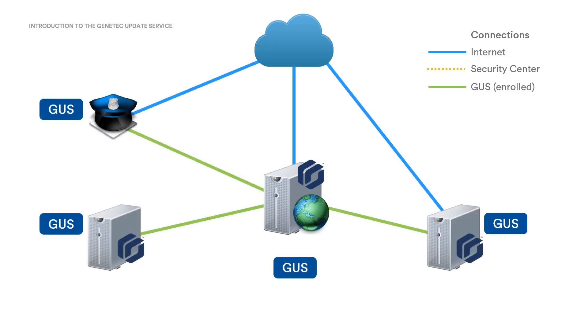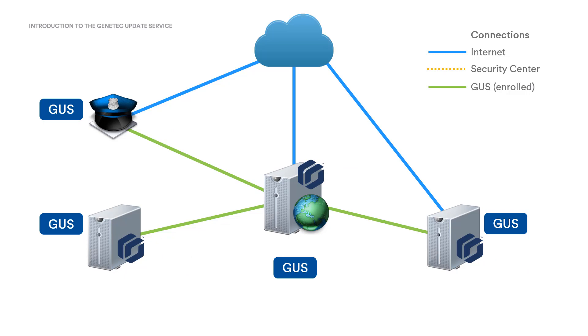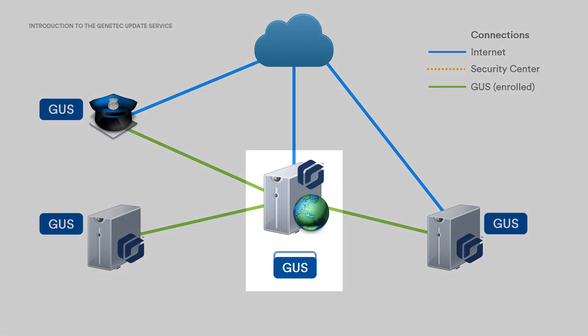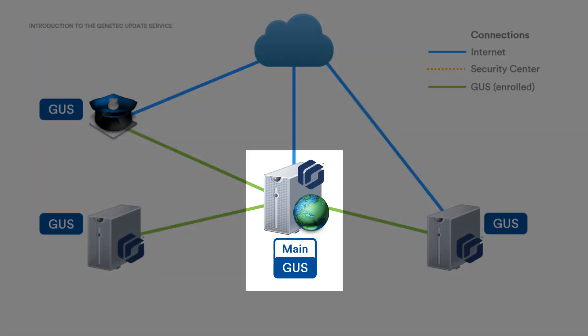The Genetech Update Service is installed on every Security Center machine and works autonomously to perform software updates on the local machine. The main GUS is the brains of the operation. It displays a centralized view of all the enrolled machines and can send update notifications to them. The primary directory server is automatically configured as the main GUS.